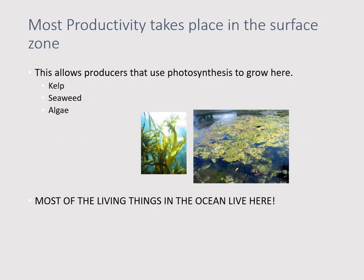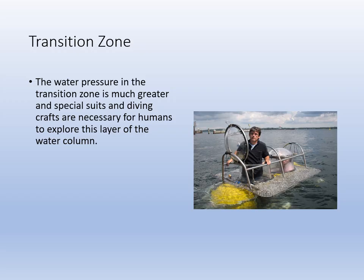In the surface zone you have most productivity — all photosynthesis, because you have to have light. In the deep ocean, you get chemosynthesis, so there is productivity there too. In that middle layer, you don't get much. That transition zone is the oxygen minimum zone. We can study it using submersibles.